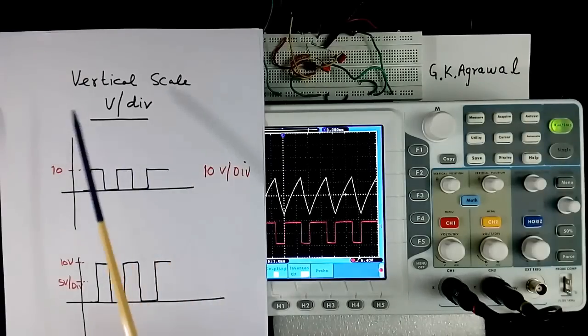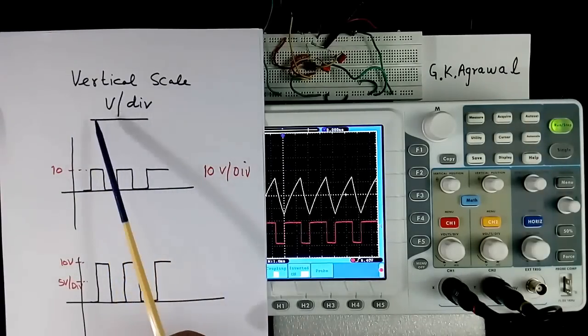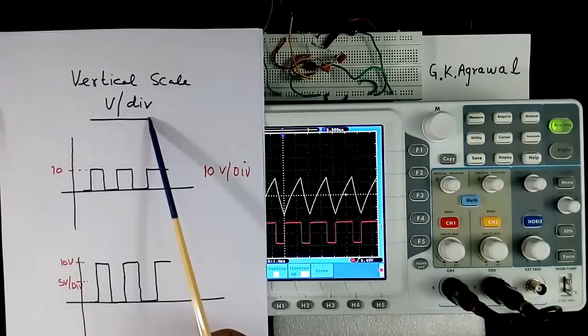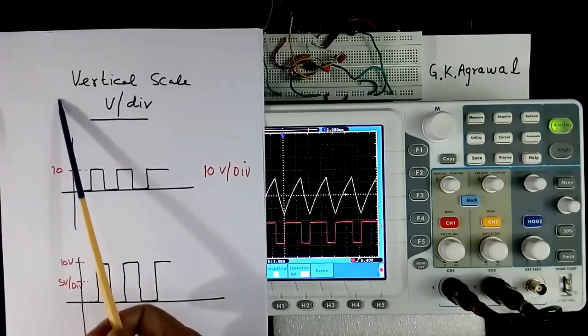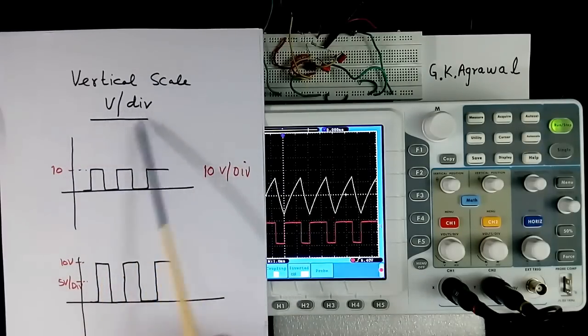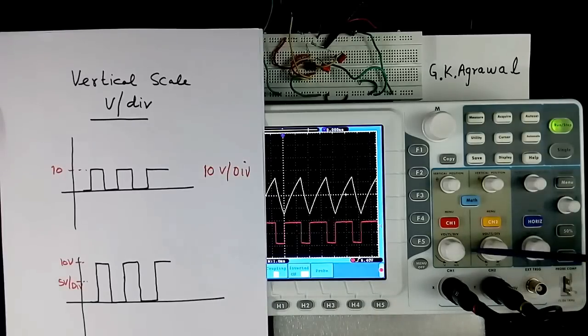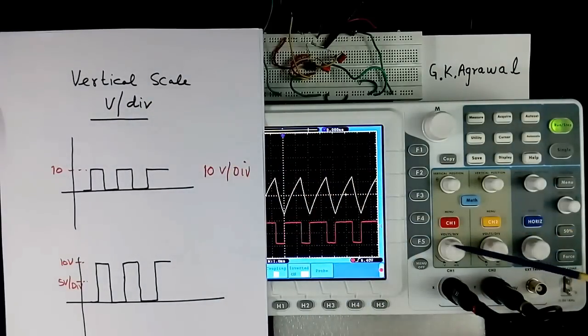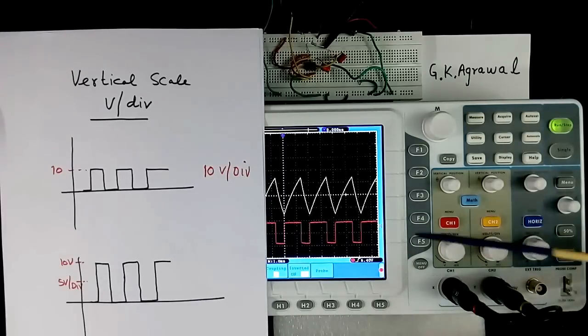Now we will discuss vertical scale, voltage per division. Vertical scale means Y axis. Volt per division scaling in Y axis. So there are 2 knobs here for both channel. This control vertical scale control will be different. You can select separately. One may be 10 volt per division. Another may be 5 volt per division.